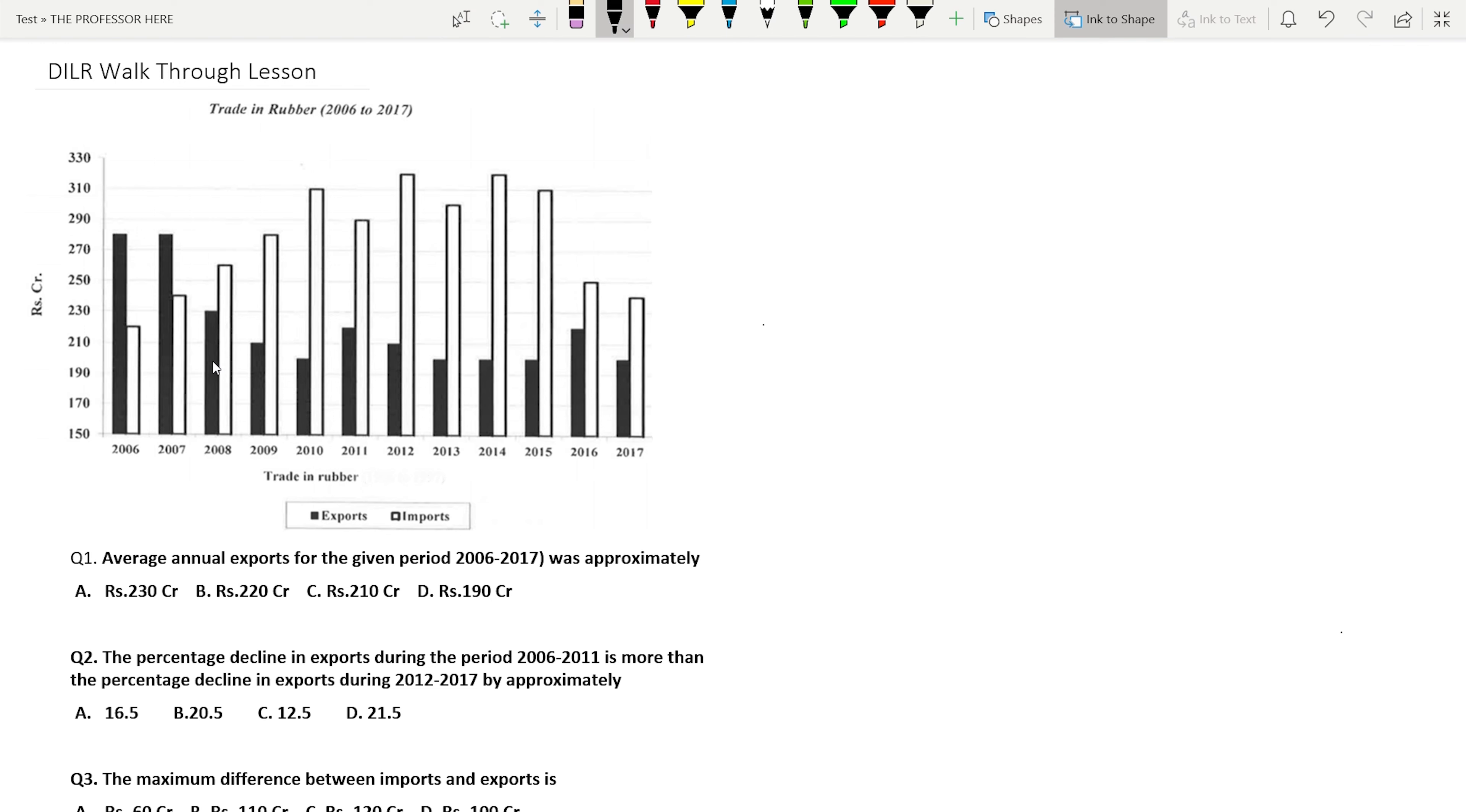Let's take a look at the bar graph in front of us. The bar graph represents trade in rubber from 2006 to 2017. The year is marked on the x-axis and rupees in crore on the y-axis. Each bar represents exports and imports. Exports is represented by this bar and imports by this white one. For example, in 2006, exports was 280 and import was 220. In 2007, exports was 280 again and import was 240.